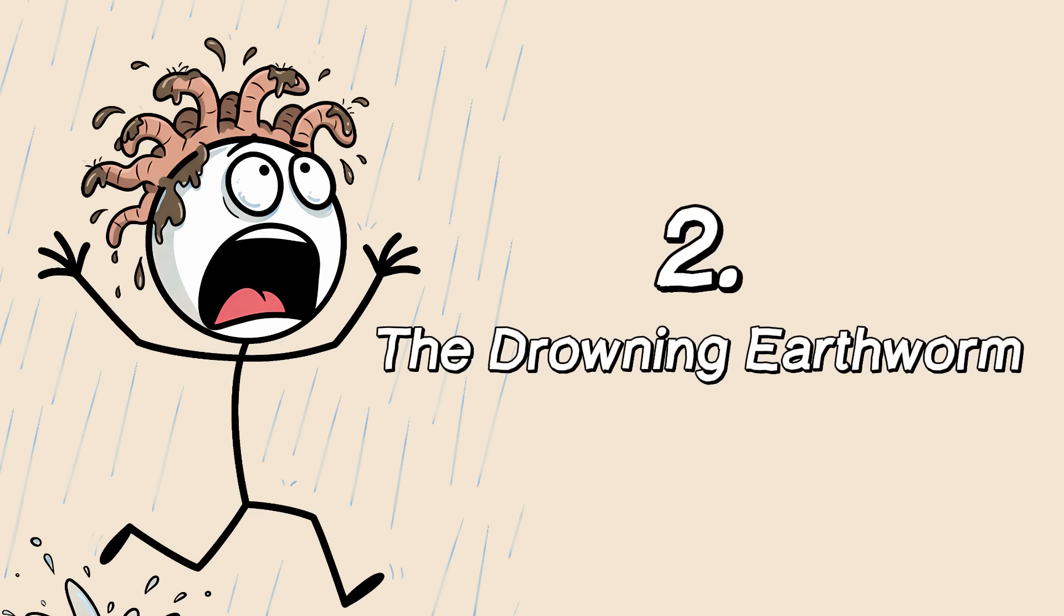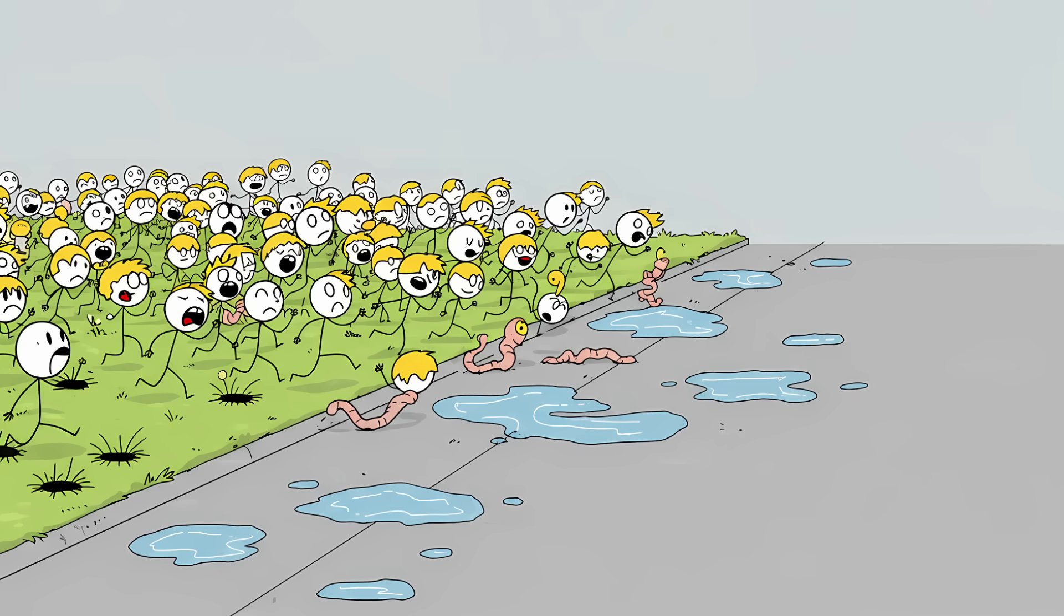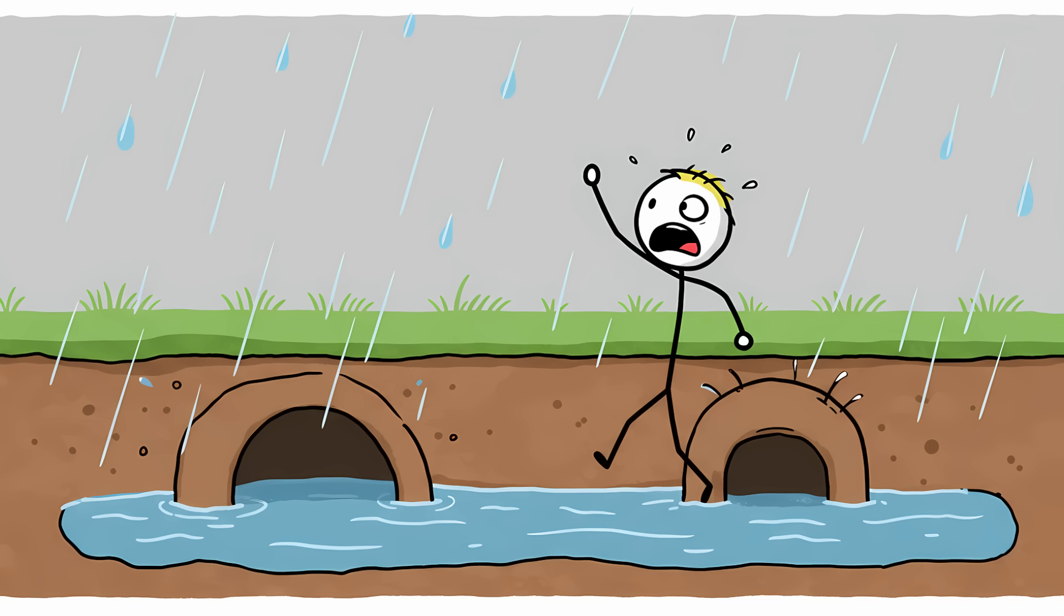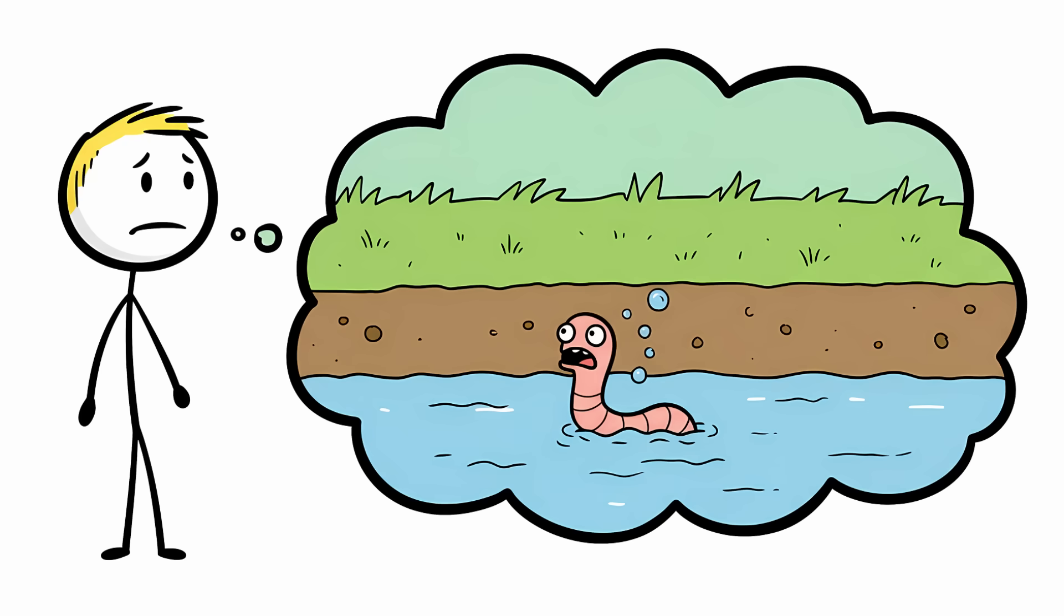Number two. The Drowning Earthworm. A heavy rainstorm passes, and the sidewalks are suddenly littered with the writhing bodies of earthworms. It's a scene of mass exodus, and the common explanation is a simple one. Their underground burrows have flooded, and they've scurried to the surface to escape a watery grave. They are fleeing for their lives, desperately seeking high ground to avoid drowning. It makes perfect sense. They breathe through their skin, and they can't do that underwater, right? Well, not exactly.